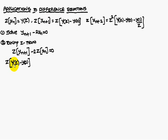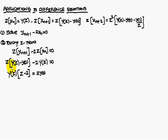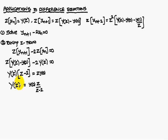Therefore, Z·Y(Z) minus Y(0) minus 2 times of Y(Z) is equal to 0. Now take Y(Z) as common. You are left with Z minus 2. Therefore, Y(Z) into (Z minus 2) is equal to whatever terms remain on the left-hand side moved to the right-hand side, that means plus Z·Y(0). So Y(Z) is equal to Y(0) times Z by (Z minus 2).